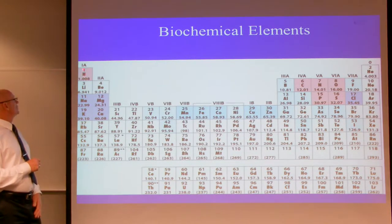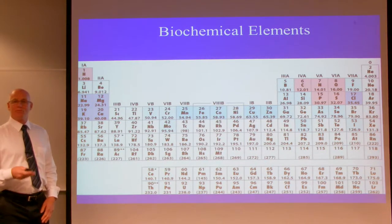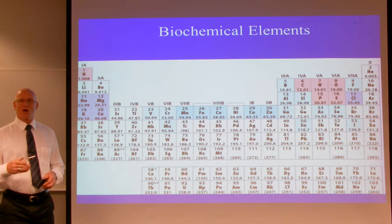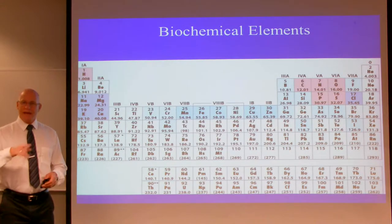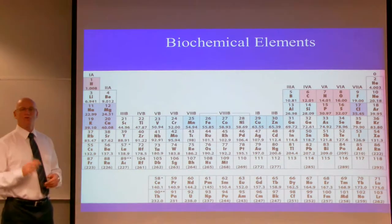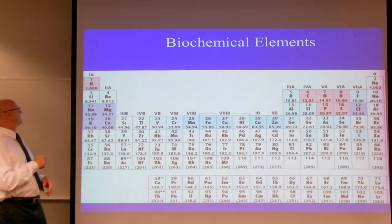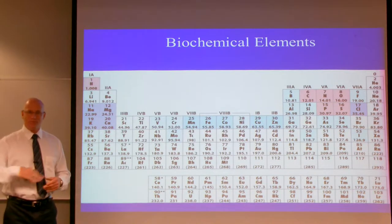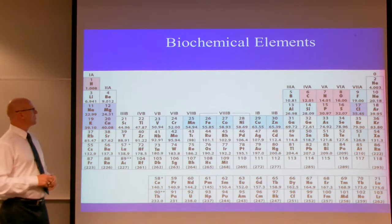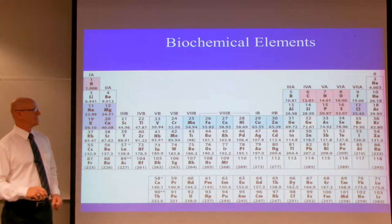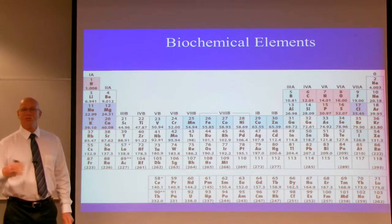If you look at hydrogen, you can see it has the number one above it — that means the number of protons it has. An atom has a nucleus which contains protons and neutrons. Protons are positively charged, neutrons are neutral, and electrons orbit around the nucleus with a negative charge. The number of protons equals the number of electrons in its shell. So hydrogen has one electron, carbon has six, nitrogen has seven, and oxygen has a total of eight electrons.